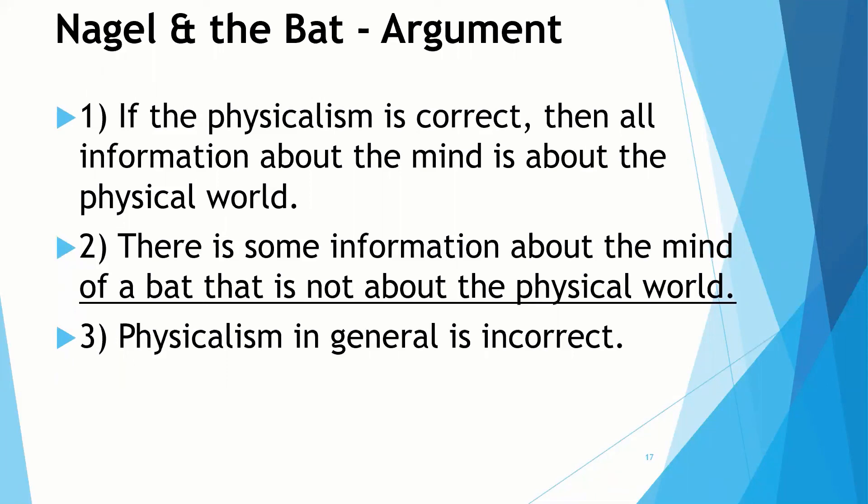That's some information about the mind of a bat that's not about the physical world. We put it with our first premise, we draw the conclusion. And this one, notice, is not specifically directed at functionalism. It's directed at physicalism as a whole. So it's a criticism of the identity theory as much as it is of functionalism. This would push us back towards some kind of dualism.